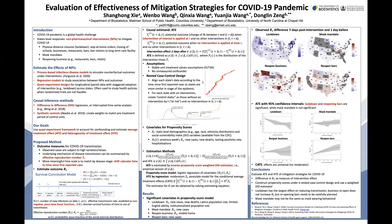In conclusion, the lockdown has the largest effect on reducing transmission. Reopening businesses does not increase R_T, but reopening businesses needs to be carefully planned. Also, we should be careful in interpreting the effect of mask mandates, because a mask mandate may not be the same as actual mask-wearing behavior. Here are the two papers involved in this presentation. Thank you.